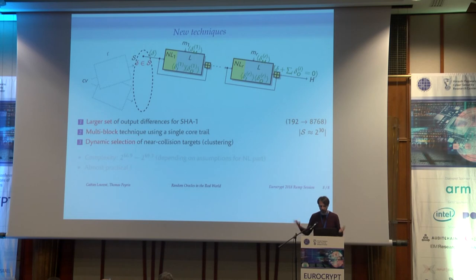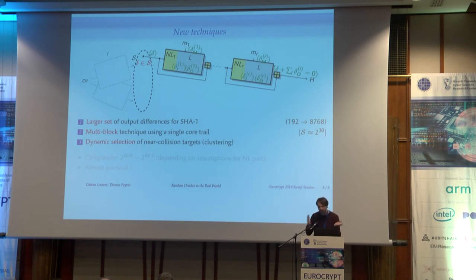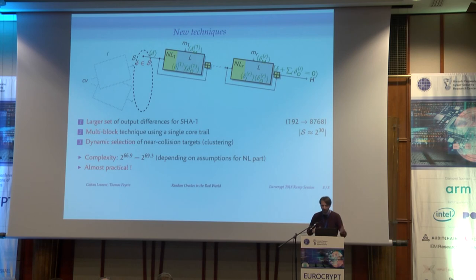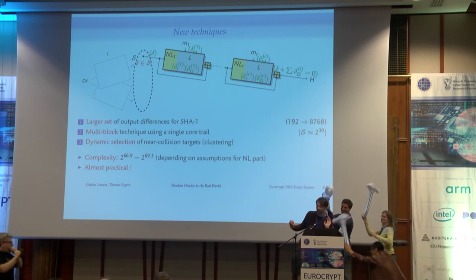We have some improvements to this attack — new techniques to get a better chosen-prefix collision attack on SHA-1. The first thing is we use a larger set of output differences in the compression function, then we use a multi-block technique like what was done on MD5 earlier, but here it's a bit different because we always use the same linear trail. We also use some random clusters. In the end, we have an attack with complexity between 2^67 and 2^69, so it's almost practical — much more so than normal collision attacks.